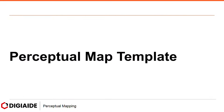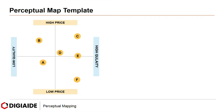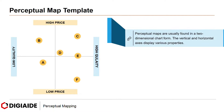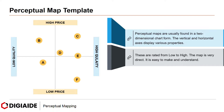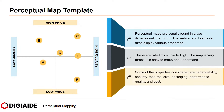Now let's look at an example of a Perceptual Map Template. Perceptual Maps are usually found in a two-dimensional chart form. The vertical and horizontal axes display various properties. These are rated from low to high. The map is very direct — it is easy to make and understand.